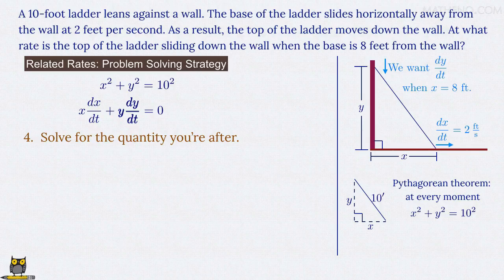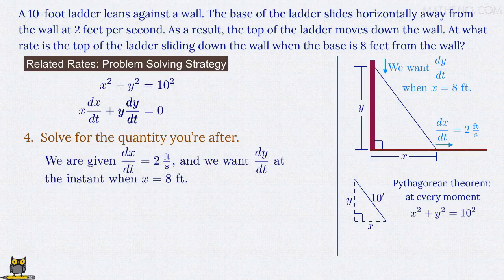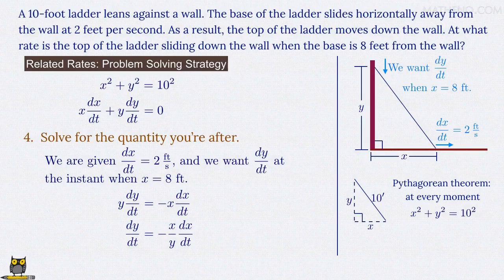That takes us to the fourth step, which is to solve for the quantity we're after. Remember we want the value of dy/dt at the instant when x equals 8 feet. So let's isolate the y dy/dt term on the left, and move the x dx/dt term to the right side of the equation where it becomes negative. We can then divide both sides of the equation by y to get rid of it from the left, and we're left with dy/dt equals negative x over y times dx/dt.